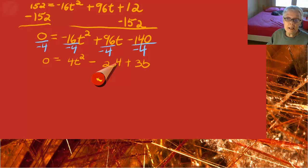So now our a number is 4, our b number is negative 24, and our c number is 35. And we are going to have to factor by grouping because the coefficient of the t square term is not 1.